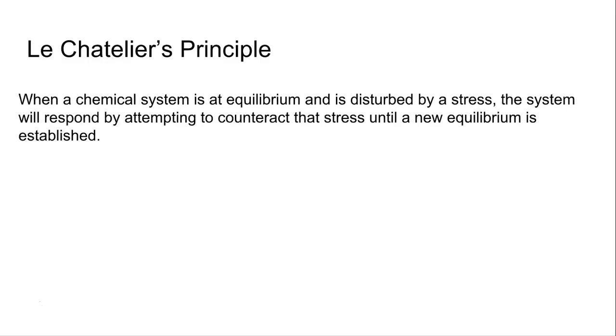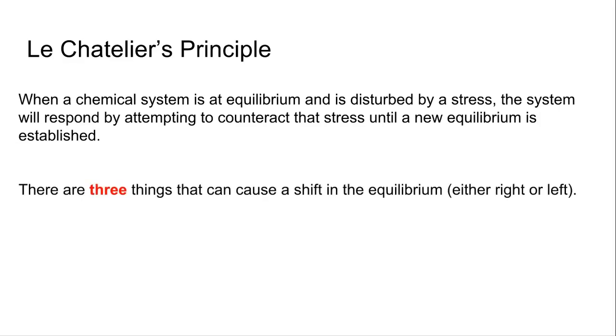That's a lot of words. So let's see how we got this. Essentially, there are three things that you can do to cause a shift in equilibrium. Either we'll shift it right or left, favoring products or reactants.